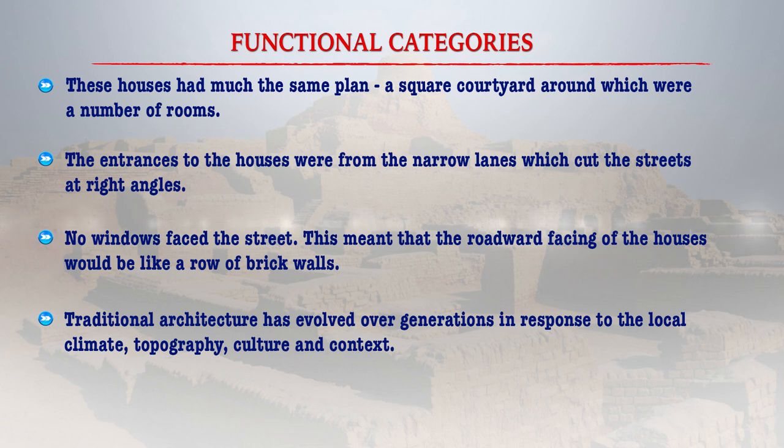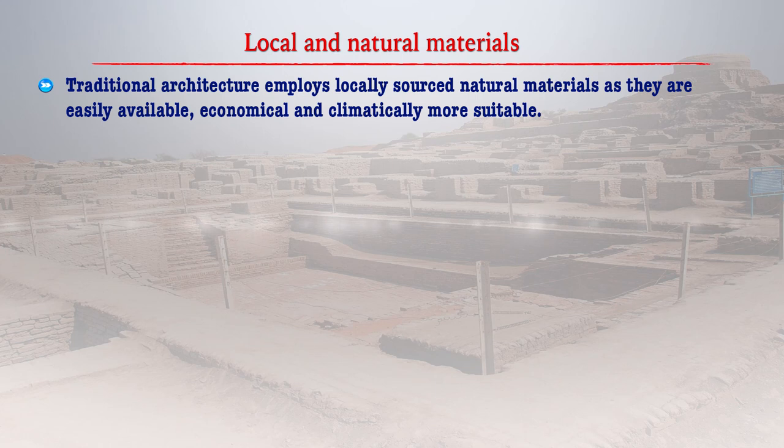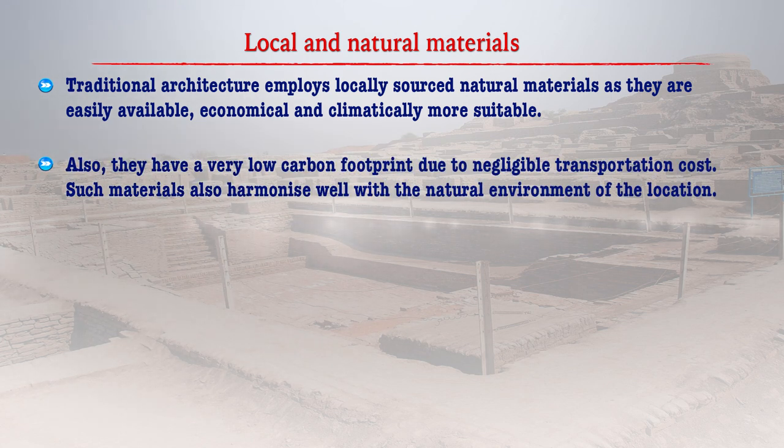Learners, traditional architecture has evolved over generations in response to the local climate, topography, culture and context. It employs locally available natural material and indigenous construction techniques. Along with sustainability, it has cost effectiveness and a strong aesthetic character. Traditional architecture employed locally sourced natural material as they were easily available economically and were more climatically suitable. They also had a very low carbon footprint due to negligible transportation cost, and such material harmonizes well with the natural environment of the location.